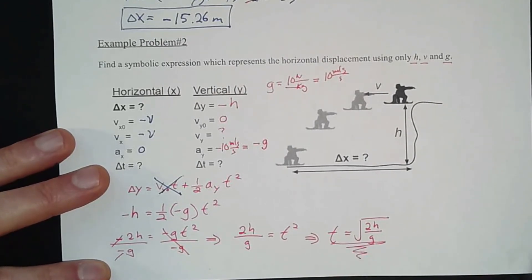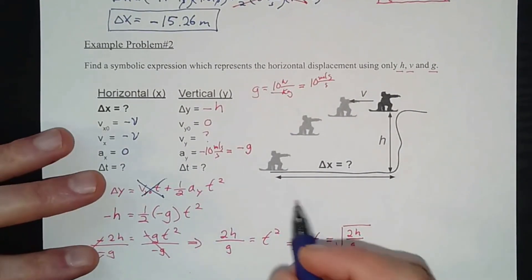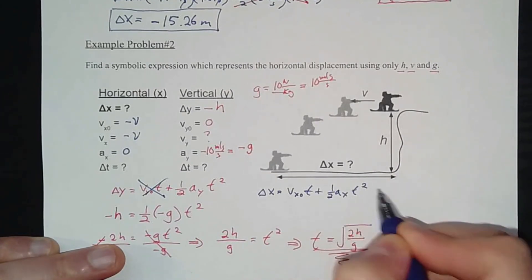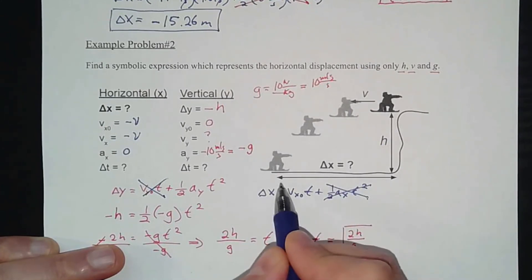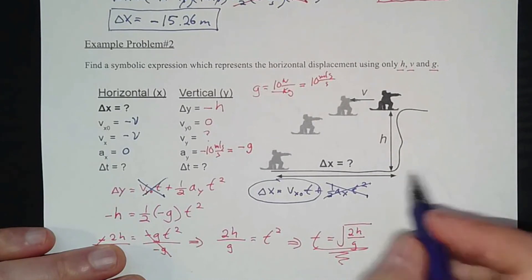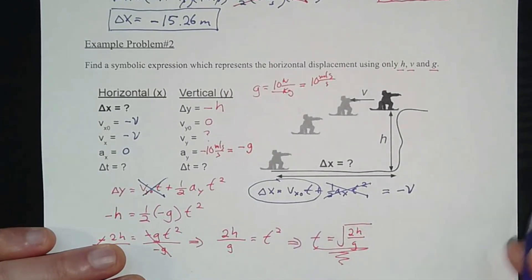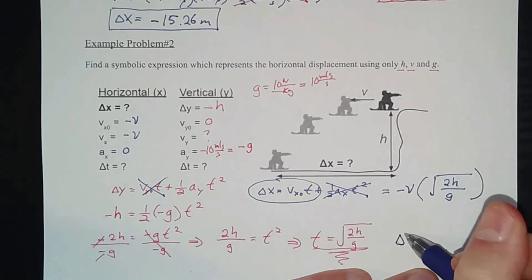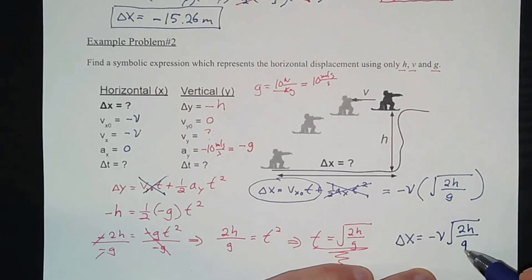For the symbolic horizontal displacement, we use Δx = v_ix·t + ½·a_x·t². Since horizontal acceleration is zero, the second term vanishes. Plugging in v_ix = −v and t = √(2h/g), we get: Δx = −v·√(2h/g). This is the symbolic expression for the horizontal displacement — negative v times the square root of 2 times height divided by g.